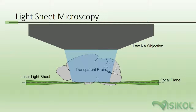The way a light sheet microscope works is by switching from an inverted or upright diffuse light source to a laser light source that is mounted orthogonally to the objective. Using cylindrical shaping lenses, the laser light sheet is transformed into an ultra-thin sheet of light that is, for example, 10 millimeters wide by 5 microns thick. Instead of illuminating an entire depth of the tissue, this approach only illuminates an ultra-thin sheet of the cleared and fluorescently labeled tissue that is in the same plane as the imaging objective's focal plane.